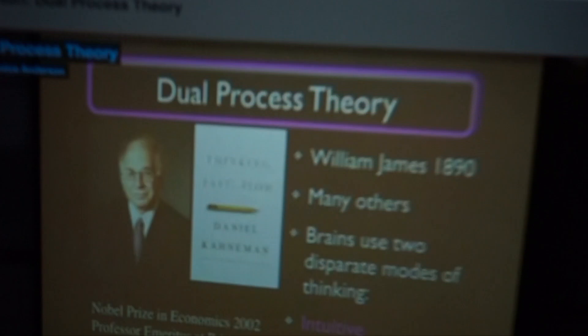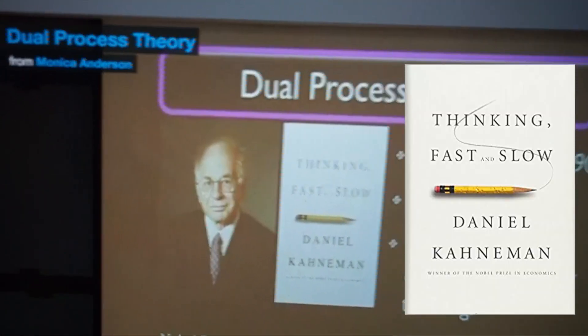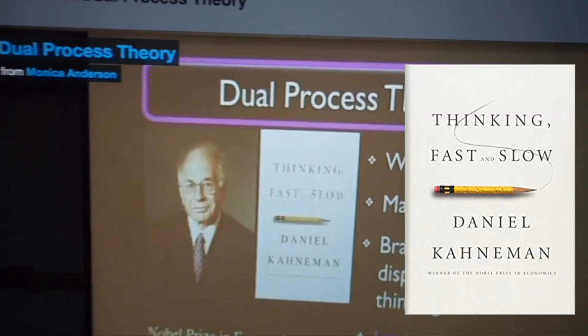I watched a really awesome video this morning — I'll put the link in the description. It was on dual process theory, which is from the book Thinking Fast and Slow by Daniel Kahneman. The book is actually incredible, it's so in-depth. He's a famous psychologist who has a Nobel Prize in economics. Essentially what the book covers is two frames of mind when the mind is thinking.